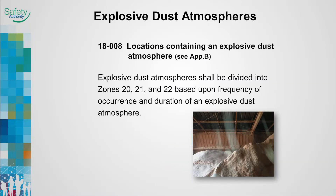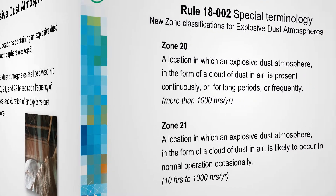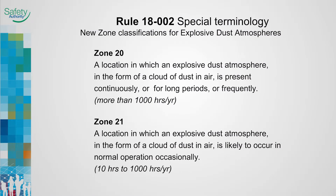Explosive dust atmospheres are categorized on the basis of how often the hazard occurs and the length of time the hazard exists. The classifications and associated timeframes are from the International Electrotechnical Committee Standards for Hazardous Area Classifications. Zone 20 is a location with the highest risk of explosion; if an explosive dust atmosphere is present more than 1,000 hours a year, it is a Zone 20 location. Zone 21 is a location with a lesser risk; if present from 10 to 1,000 hours a year, it is a Zone 21 location.